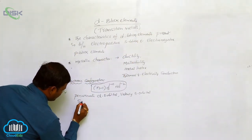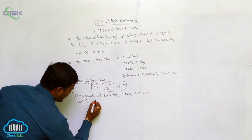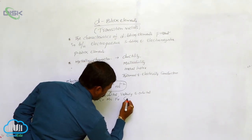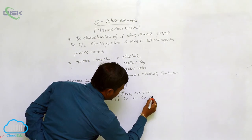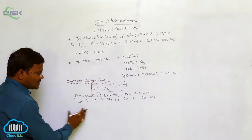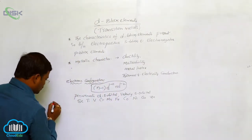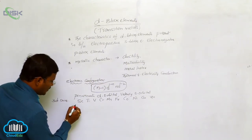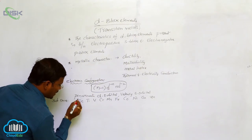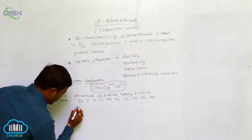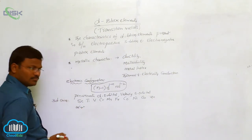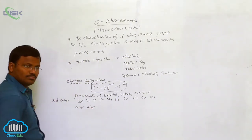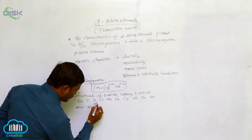The 10 elements of the 3D series are: Scandium, Titanium, Vanadium, Chromium, Manganese, Iron, Cobalt, Nickel, Copper, and Zinc. The electron configuration for Scandium is 3d¹ 4s², Titanium is 3d² 4s², and Vanadium is 3d³ 4s². Chromium has a special case: 3d⁵ 4s¹, which I will explain after the general discussion.